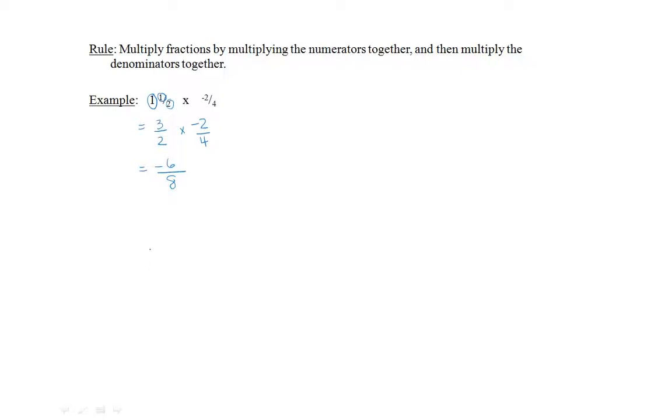The next step is to reduce to lowest terms by dividing both the top and bottom by 2. Negative 6 divided by 2, which equals negative 3 on the top, and 8 divided by 2 equals 4 on the bottom. So the final answer is negative 3 over 4.